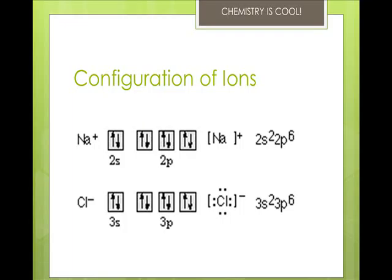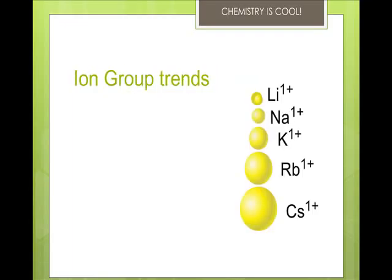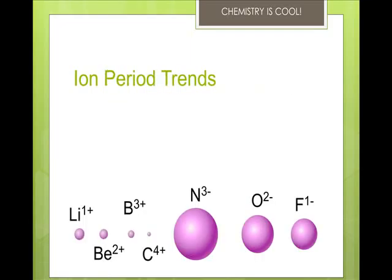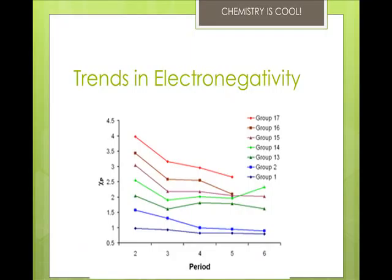Cations form by losing electrons. Cations are smaller than the atom they came from — not only do they lose electrons, but they lose an entire energy level. Metals form cations, and cations of representative elements have the noble gas configuration before them on the periodic table. Anions form by gaining electrons. Anions are bigger than the atom they came from but they have the same energy level — a greater area of nuclear charge has to cover, so they are proportionately bigger. Nonmetals form anions, and anions of representative elements have the noble gas configuration after them on the periodic table.